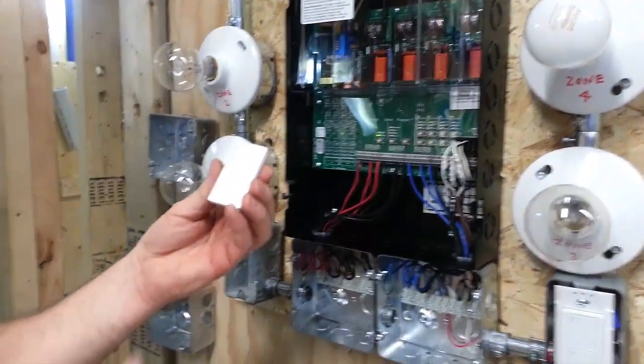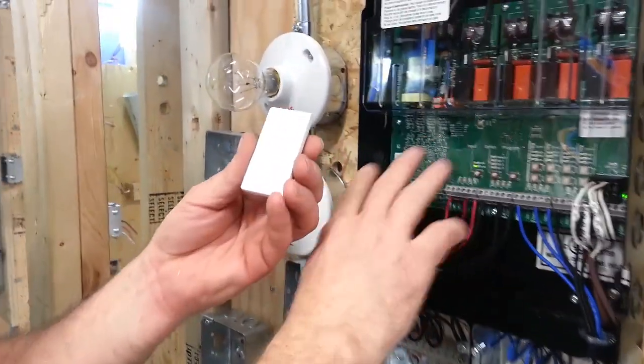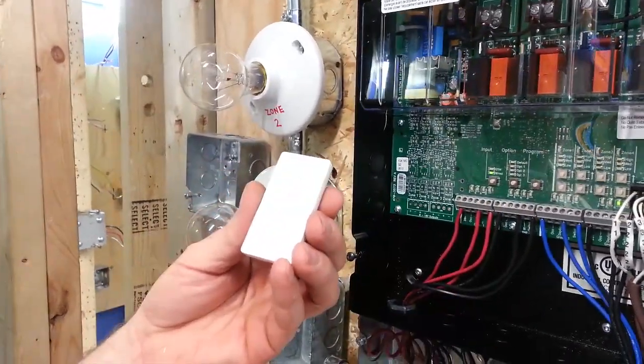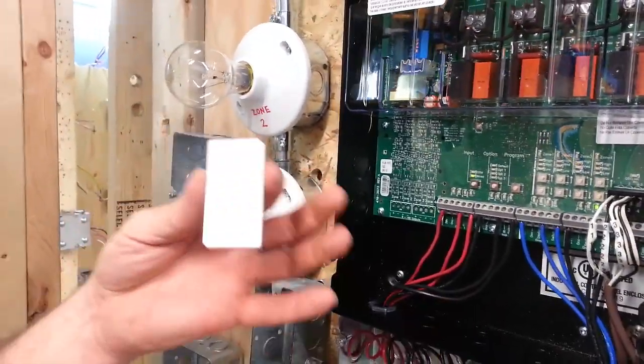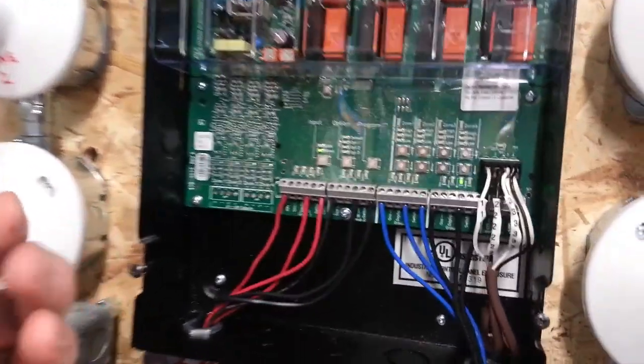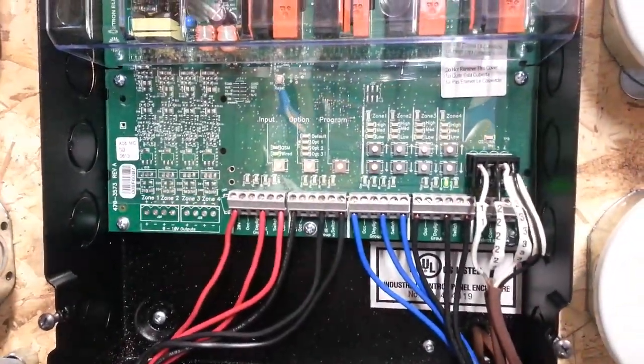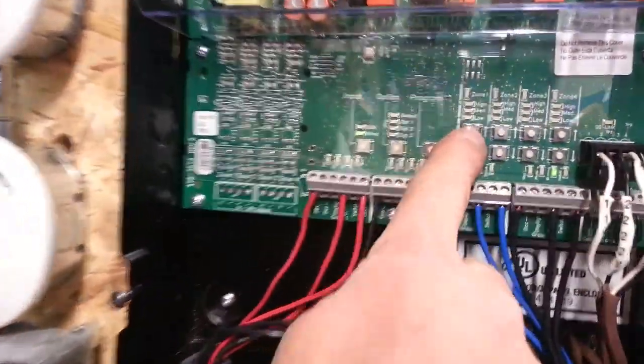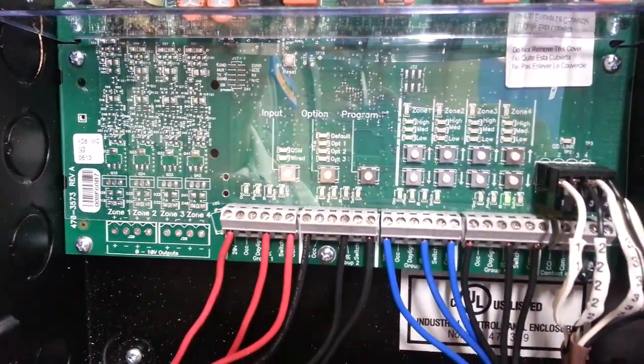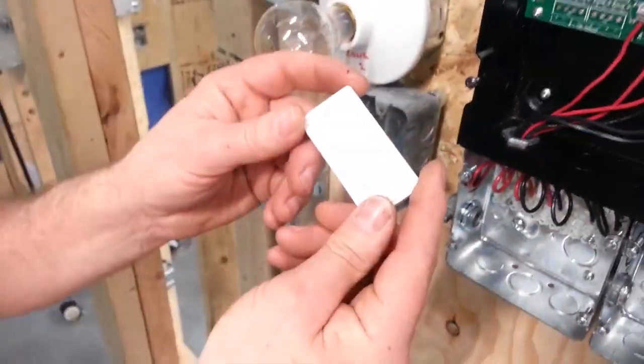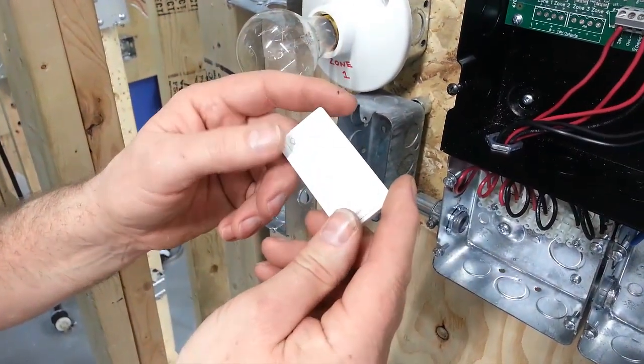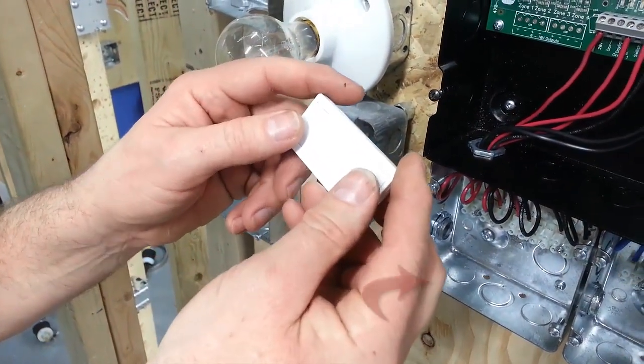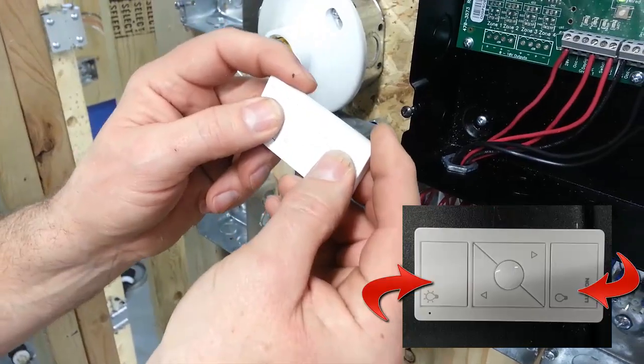Now we need to program our switch to which zone we want it to in the panel. And we can do multiple zones. We can do more than one. So, first of all, we start by, these are your zones here. One, two, three, and four. Now, first of all, you go to your RF button. You press the on and off button simultaneously until you hear a beep.